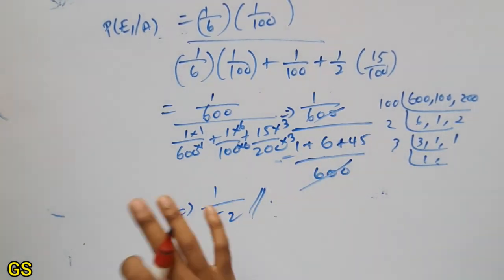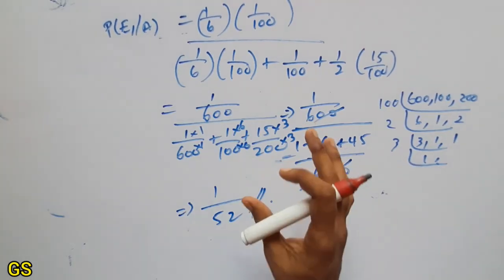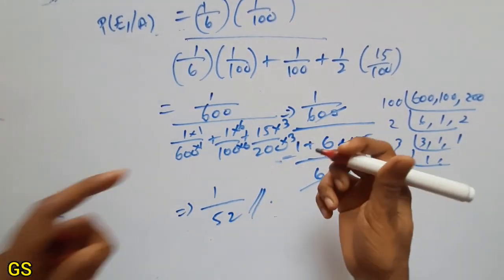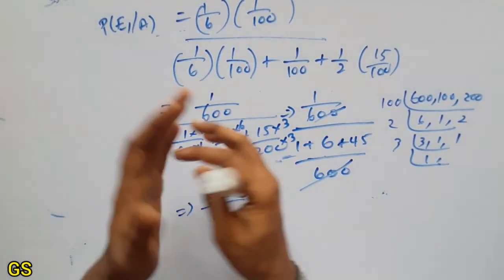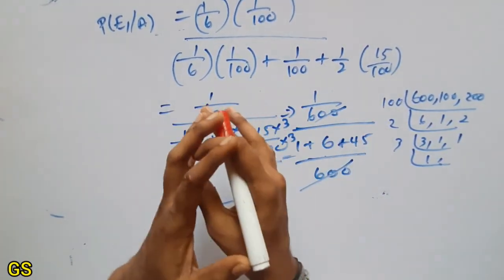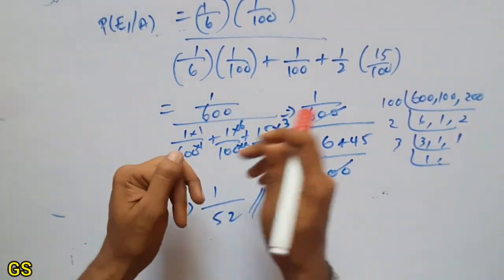Okay, so the answer is 1/52. This is the 7th sum. It's easy. For more practice, you can do the total sums. Thank you friends, bye.